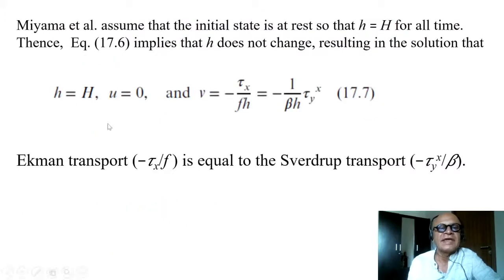Initial zonal velocity is zero, and you get meridional Ekman transport given by minus τx/fh, where we replace β with the derivative of τx—so minus one over βh τx_y.